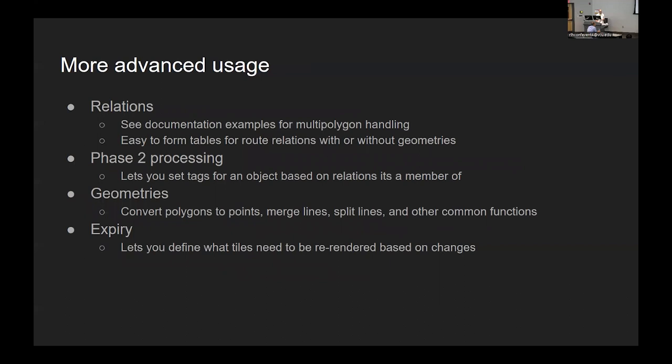There's also a lot more advanced things you can do with the flex backend. You can do relations, so you can handle multi-polygons, but you can also handle route relations, river relations. You can have tables without geometry for membership information. I'm doing this with OpenStreetMap Carto where you have a table for admin boundary stuff and a table for route membership, which you can then join against the geometry tables. These are many-to-many relationships because, particularly in the US, a single road might be part of many different highway networks.